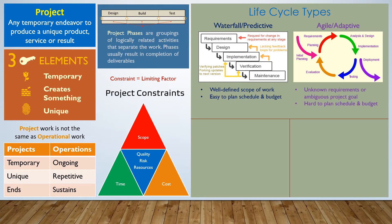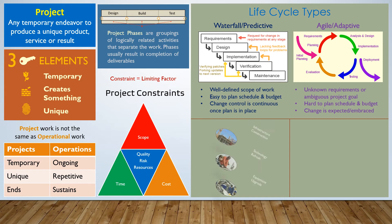Waterfall projects are easy to plan for schedule and budget, but it's hard in an agile or adaptive project to plan those same things because you have unknown requirements. Change control is continuous in a waterfall project — you have a plan and just make sure you stay on it. But in an agile project, change is actually expected because we don't have all the requirements up front, so we have to embrace that and have processes in place to manage it.